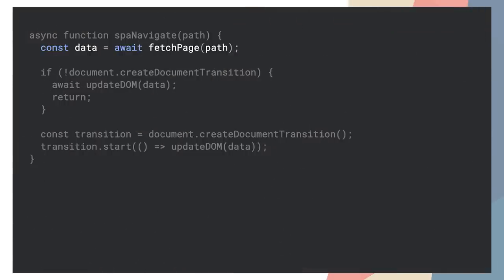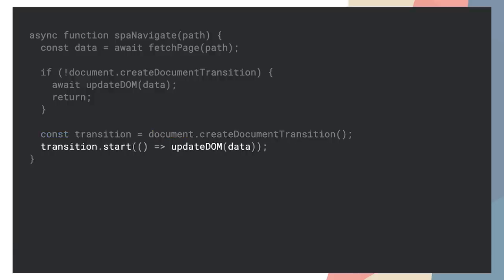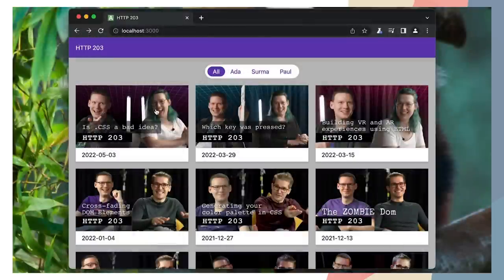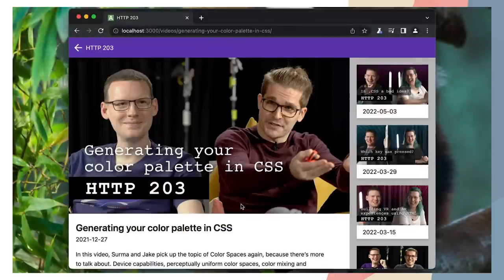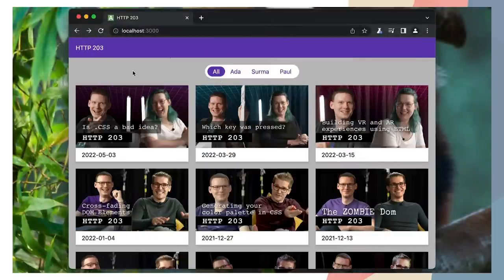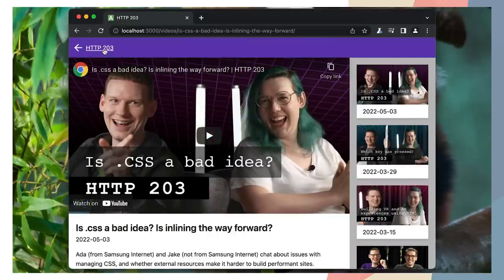Here's a rough example of how transitions work for a single page app. In the navigate function, get the new page content and check if transitions are supported. If not, update the page without the transition. Then create a transition and start it, letting the API know when the DOM change is complete. Under the hood, shared element transitions use CSS animations, so you can change from a fade-in effect to a slide-in or whatever you want.